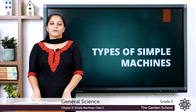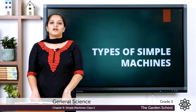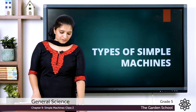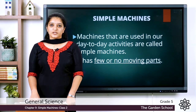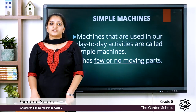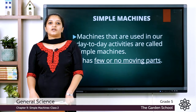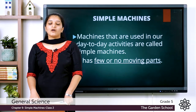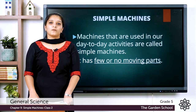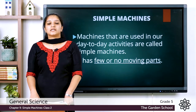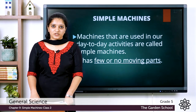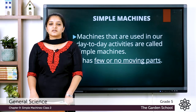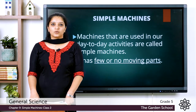Good morning students, hope you are doing well. In the previous class we learned about machines and types of machines — simple machines are any device used in our day-to-day activities to make our work easier, and their defining feature is that they have very few or no moving parts. There were six types of simple machines, and today we will see two of them: inclined plane and screw.